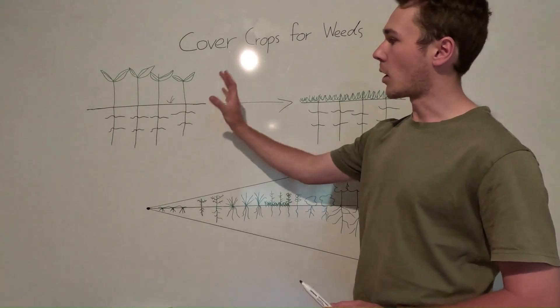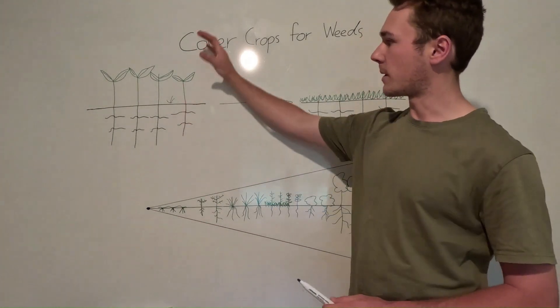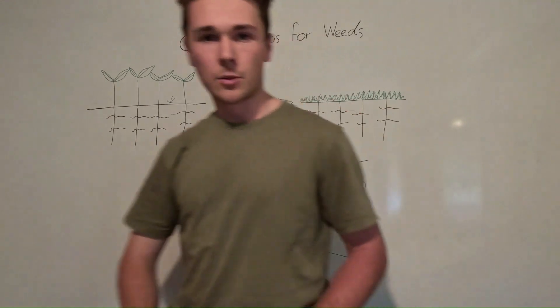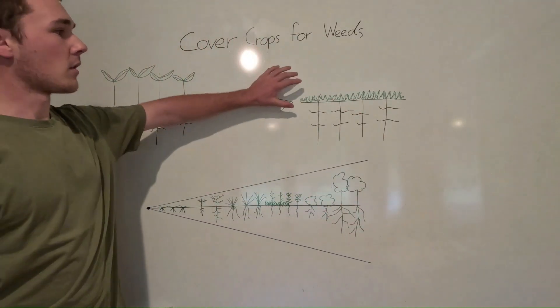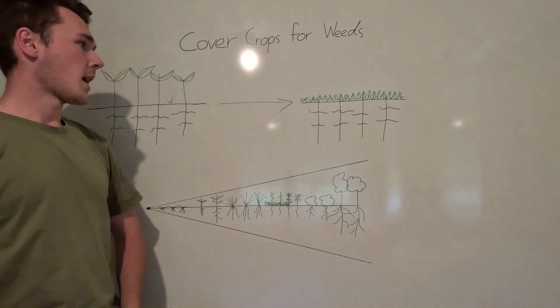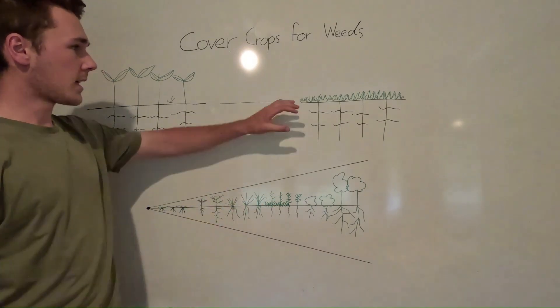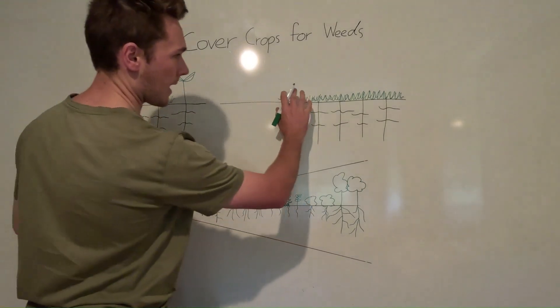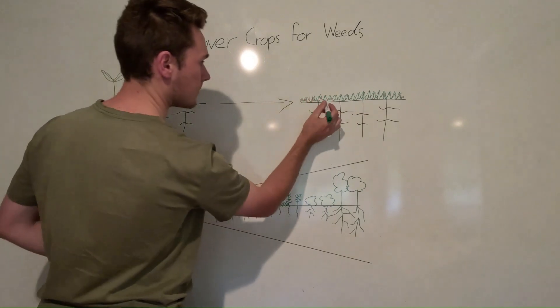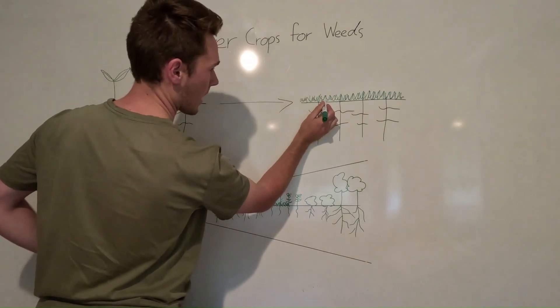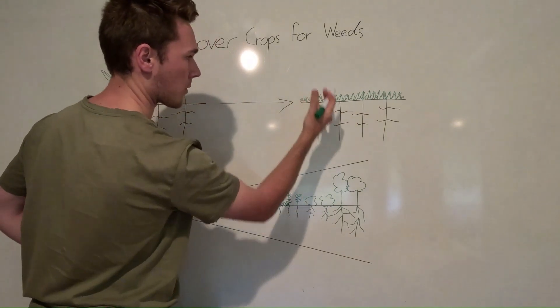Now this works both while the cover crop is growing, suppressing light as it's coming through, but it will also work once we terminate the cover crop, either through crimping it or rolling it down. If that is a really thick mulch layer of the cover crop, a weed won't have a very good time trying to push through that.